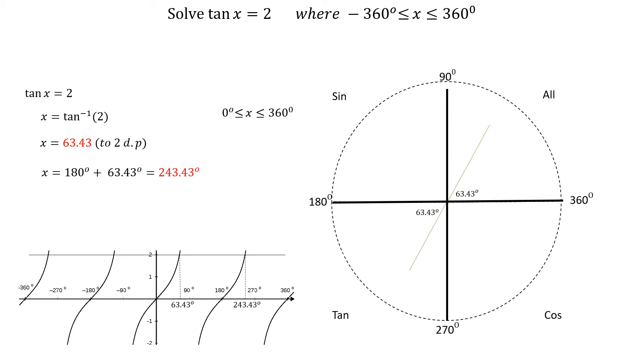Next, we go in a clockwise direction to find the solutions between 0 and minus 360 degrees. The first angle in this direction is at minus 180 degrees plus 63.43 degrees, which is minus 116.57 degrees. And the last angle is at minus 360 degrees plus 63.43 degrees, which is minus 296.57 degrees.